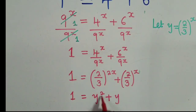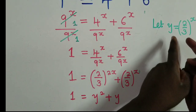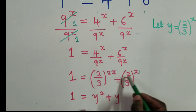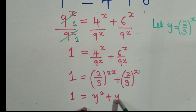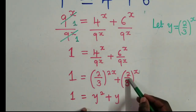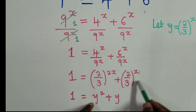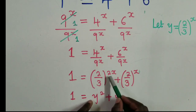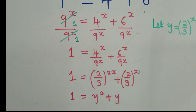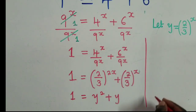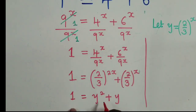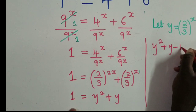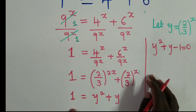We're going to say 1 equals y² plus y. The y² comes from (2/3)^x squared, which equals (2/3)^2x. The y is straightforward — we substitute y for (2/3)^x. We've now formed a quadratic equation. In standard form it is: y² + y − 1 = 0.